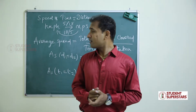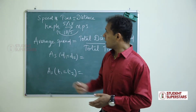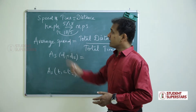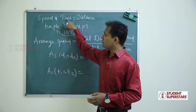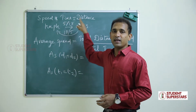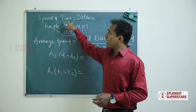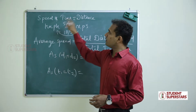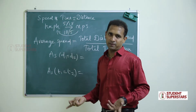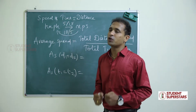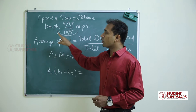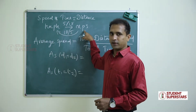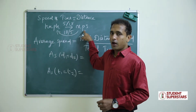But here we need some formulas. Speed × Time = Distance. Time = Distance ÷ Speed. Speed = Distance ÷ Time. We should also know the unit conversions — for kilometer per hour to meter per second.